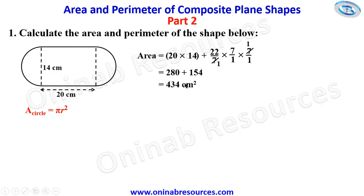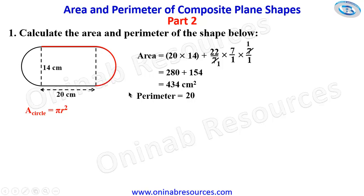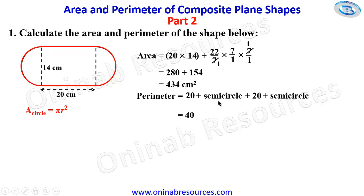We then go ahead to find the perimeter of the shape. The perimeter is the distance around the shape. It is not that you find the perimeter of the rectangle, find the circumference of the two semicircles, and add them. No — we start from one point, then move around and add the sides and the semicircles. Starting from here, this side is 20 centimeters, plus the semicircle, then plus this side again which is 20, plus the other semicircle. We add the two 20s to give us 40.